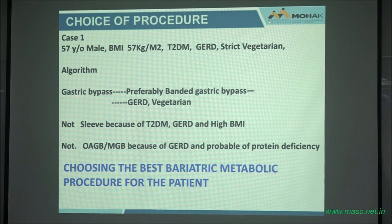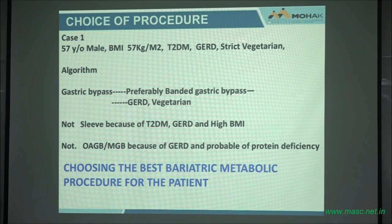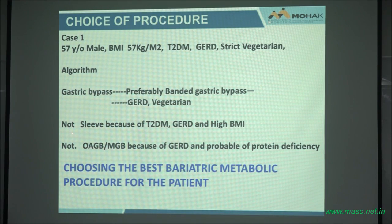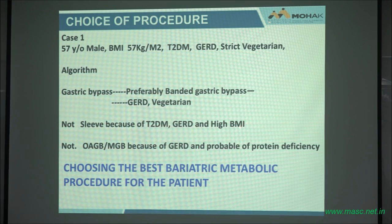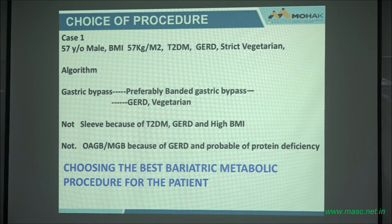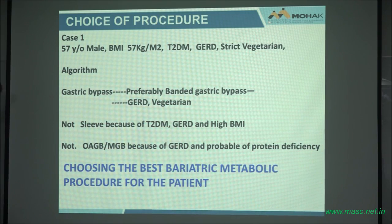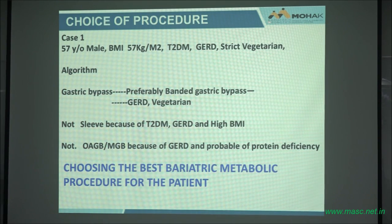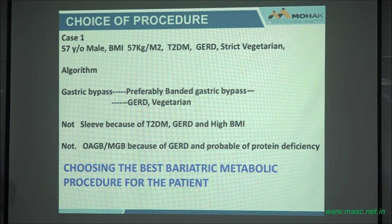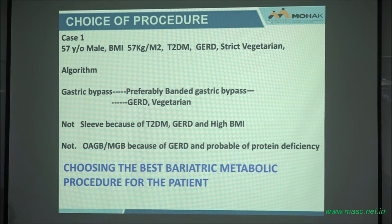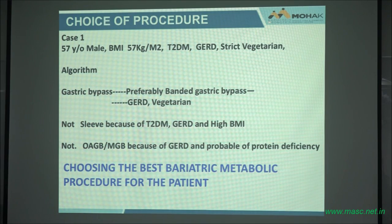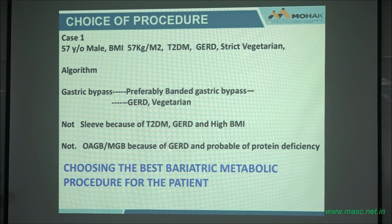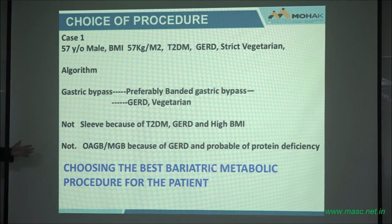The patient has GERD — you don't want to give them an MGB with GERD. The patient is a strict vegetarian — they will have protein malnutrition. Not a sleeve because type 2 diabetes is not resolved by a sleeve, GERD exists, and high BMI. The sleeve does not treat high BMI patients very well. When you have this algorithm, even the orderly in the room at the Mohawk clinic can tell you what that patient will have — you have a system that everybody can follow.